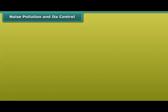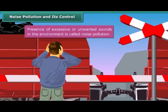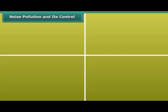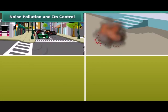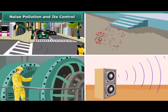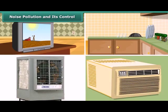Noise pollution and its control: the presence of excessive or unwanted sounds in the environment is called noise pollution. The major causes of noise pollution are sounds of vehicles, explosions including bursting of crackers, machines, loudspeakers, television and transistor radio at high volumes, some kitchen appliances, desert coolers, and air conditioners — all contribute to noise pollution.